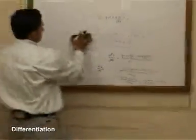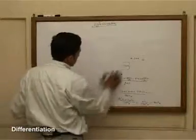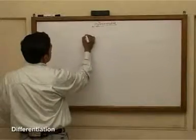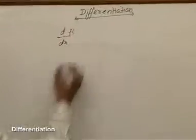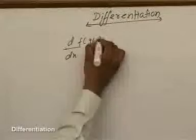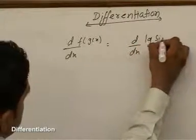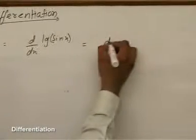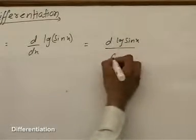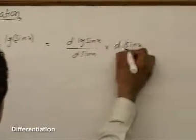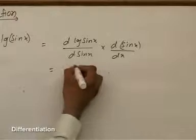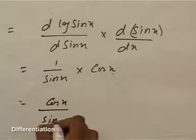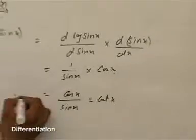Another important rule is the chain rule, applicable when functions are composed — that is, f(g(x)). For example, differentiating log(sin x): first differentiate log with respect to sin x to get 1/sin x, then differentiate sin x with respect to x to get cos x. So the result is cos x / sin x, which is cot x.